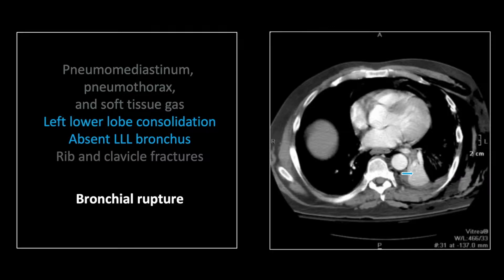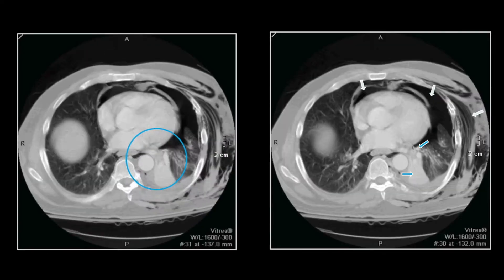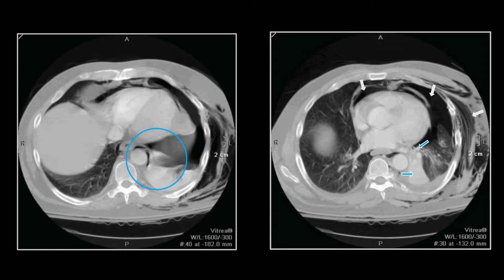There is another great view of the atelectatic and consolidated left lower lobe and the absent left lower lobe bronchus. Note the rib fractures which effectively bracket the left hemithorax — I put a lot of faith in that pattern of rib fracture, taking it to indicate the presence of an esophageal, diaphragmatic, or bronchial rupture. You can also appreciate the pneumomediastinum and pneumothorax.